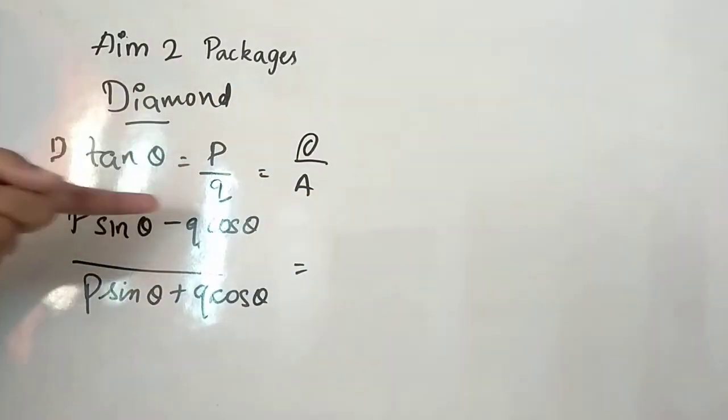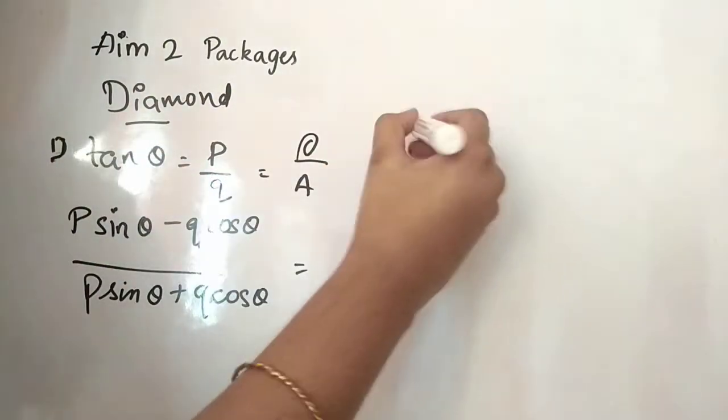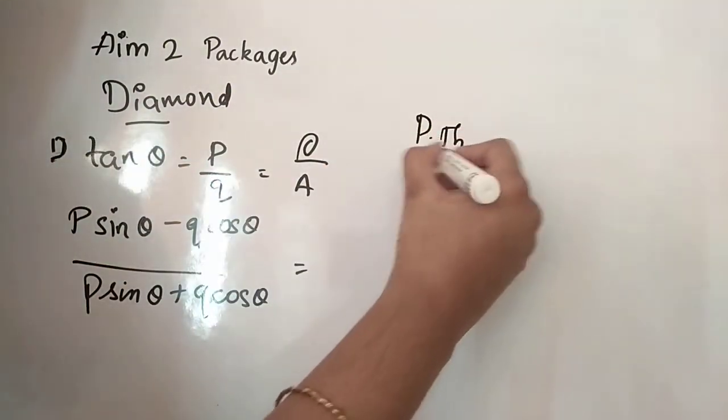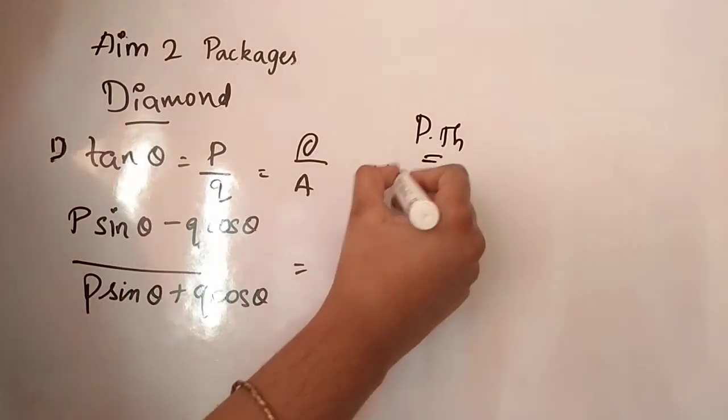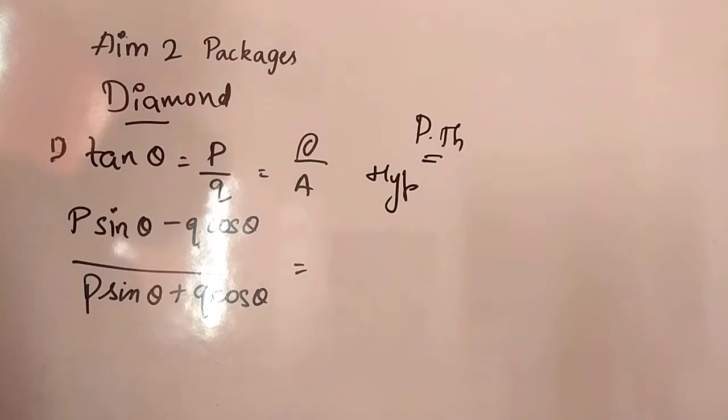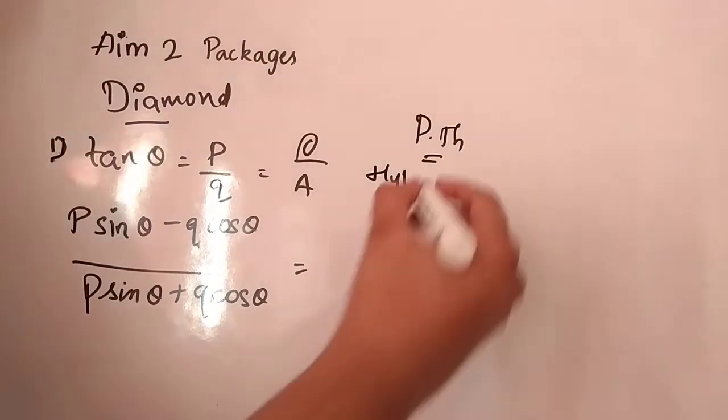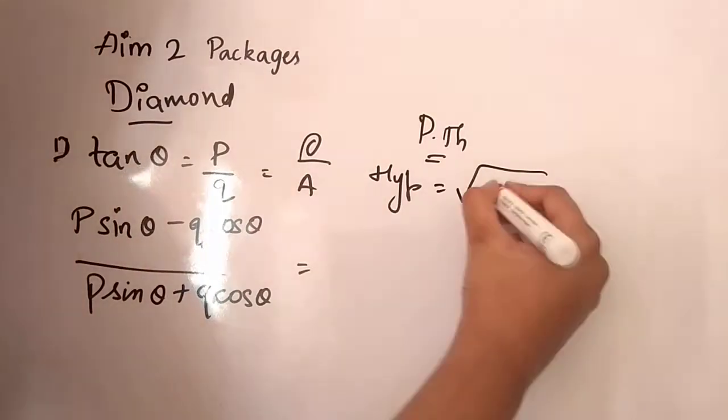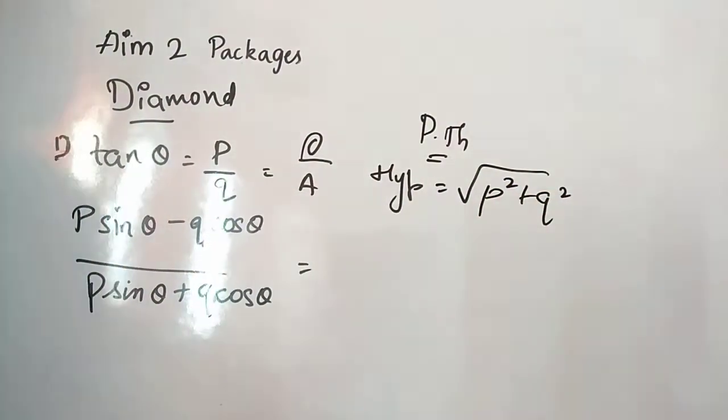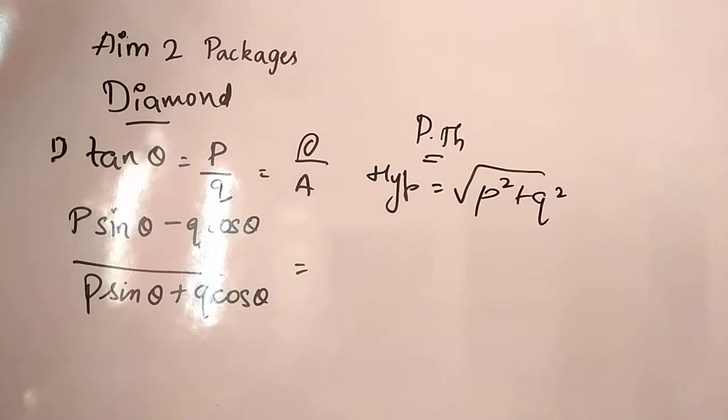Only opposite, adjacent, we know it, right? So using the Pythagorean theorem, we'll be finding the hypotenuse for this. Okay, so hypotenuse that time, it is going to be square root of P square plus Q square. Okay, when I find using this Pythagorean theorem.